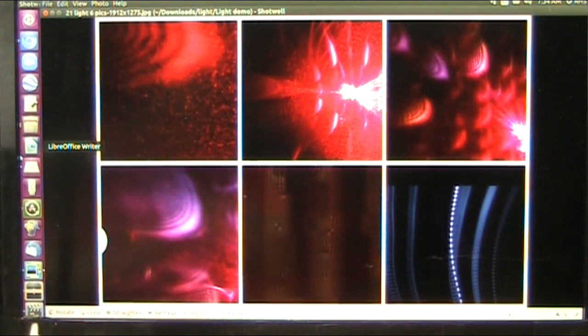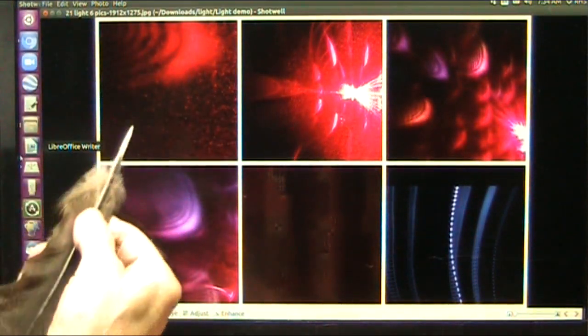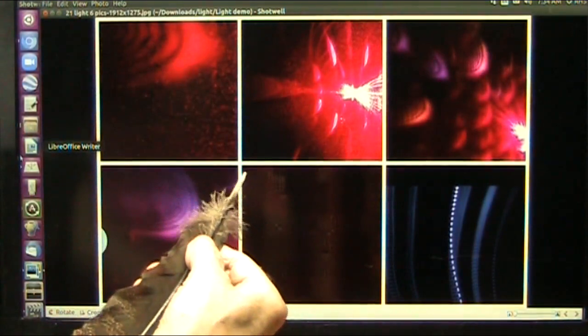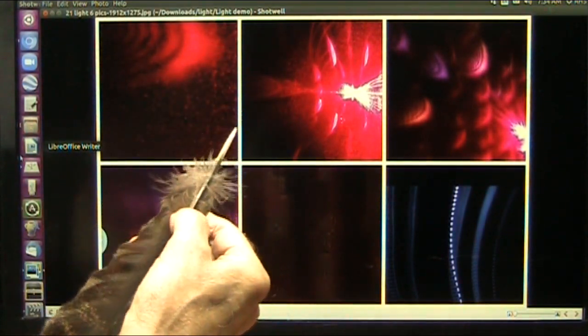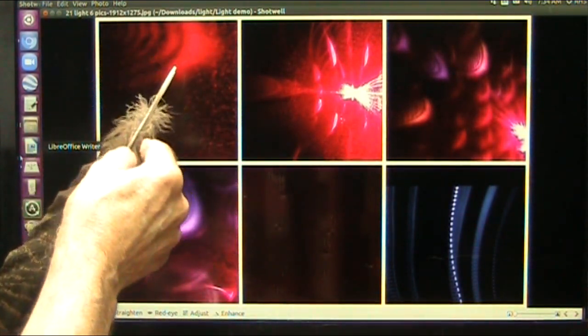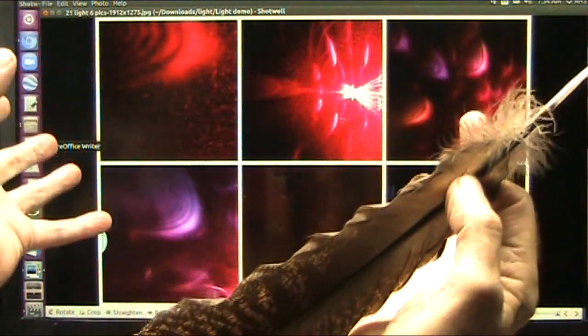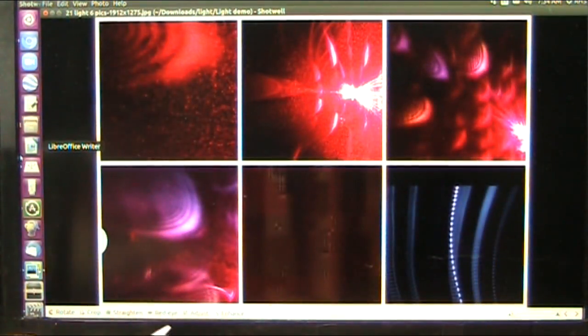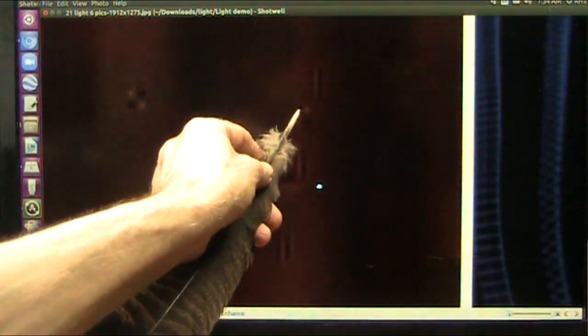Okay, so for supersymmetry to work, you have to have a counter particle to every particle that we know of, and we know of light as being a particle that glows. Well, guess what? The counter particle to the light that glows is the dark particle. You see that? And these are photons.